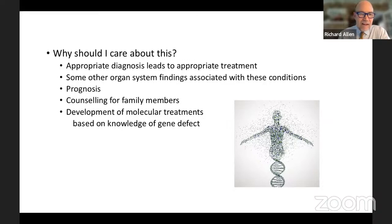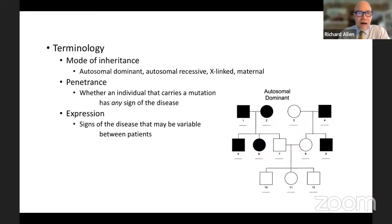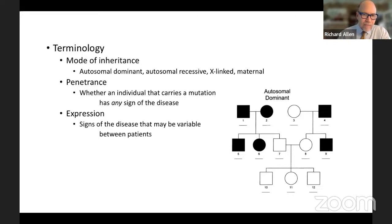Regarding genetics terminology: mode of inheritance includes autosomal dominant, autosomal recessive, X-linked, or maternal for mitochondrial DNA disorders. Penetrance means whether an individual carrying a mutation shows any sign of disease — some diseases have 100% penetrance. Expression means the signs of disease may be variable between patients, even within a family.